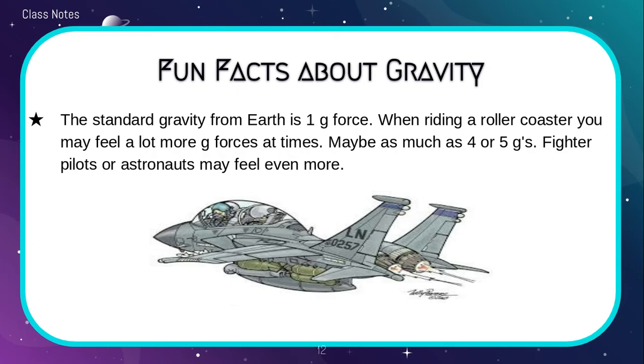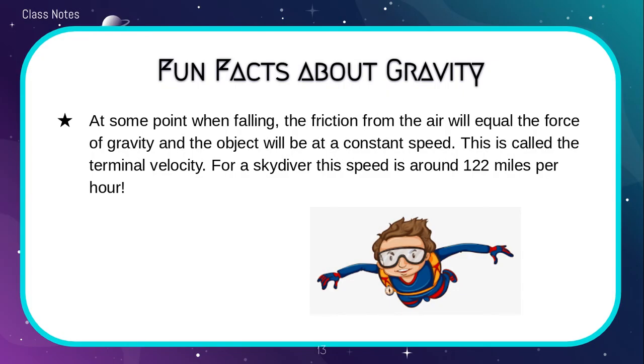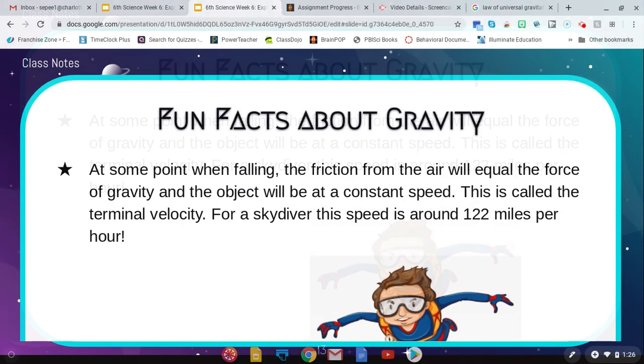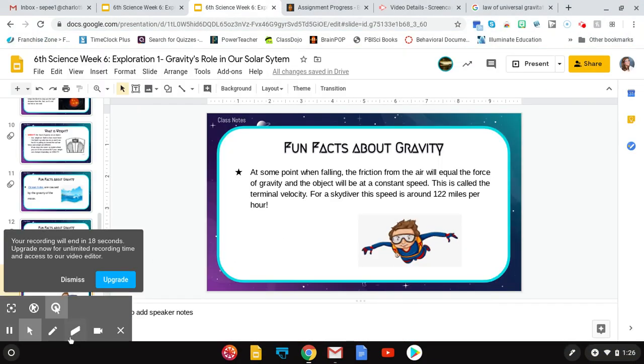It also has a lot to do with velocity as well. So skydivers can only go at a speed of around 122 miles per hour because of some of the pulls of gravity. So those are all of your notes with gravity, and just message your teacher if you have any questions or comments.